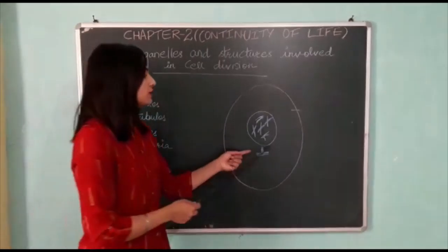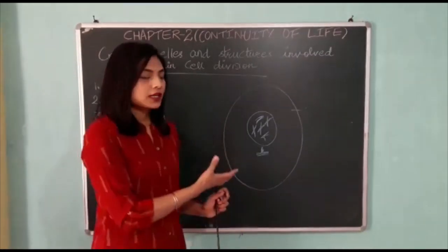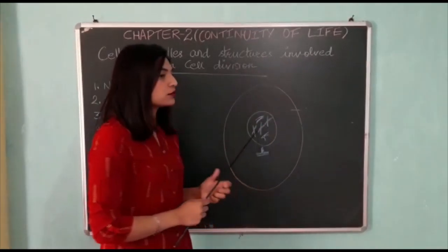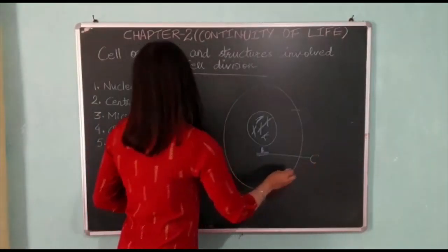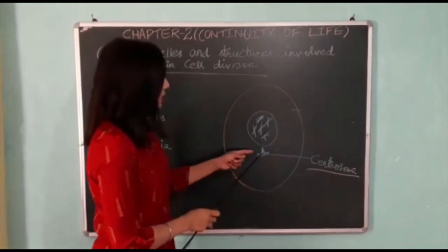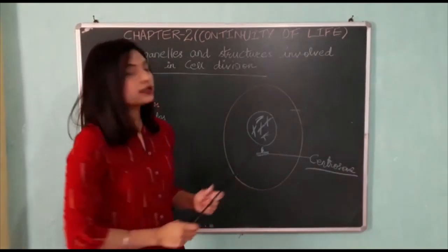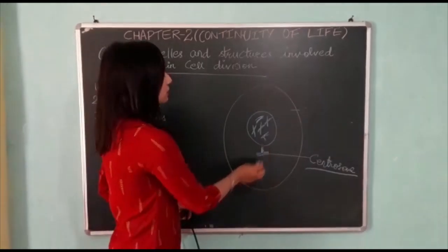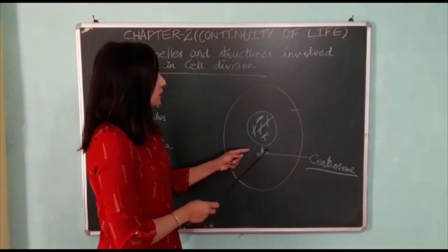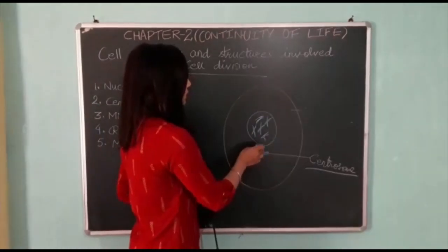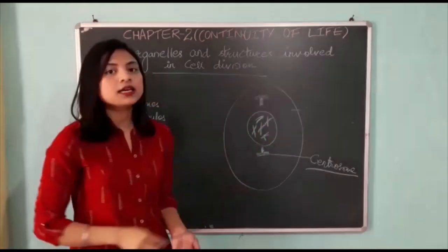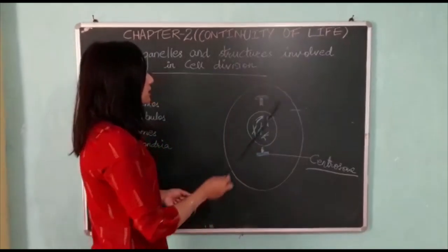When cell division starts, the centrosomes — which are located nearest to the nucleus — duplicate. This centrosome makes a duplicate of itself, and ultimately the two centrosomes migrate to opposite poles of the nucleus.